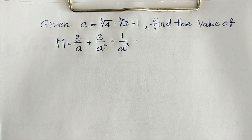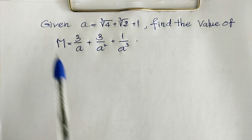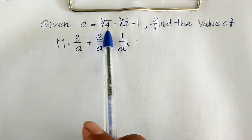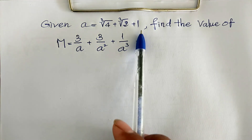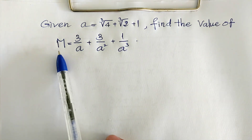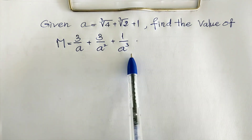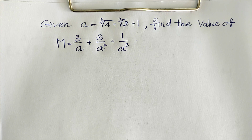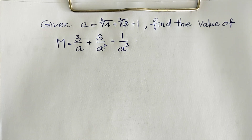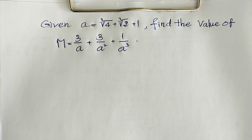Hello everyone, welcome to my YouTube channel. Today I have one exercise on paper: given A equals cube root of 4 plus cube root of 2 plus 1, find the value of expression M, which equals 3 divided by A, plus 3 divided by A squared, plus 1 divided by A to the power 3. If you know how to solve this, please try it first, then come back to verify your solution. Please don't forget to subscribe to my channel for more exciting videos.